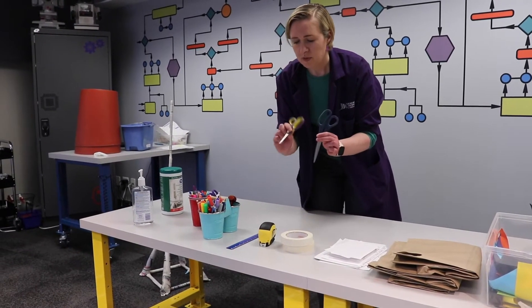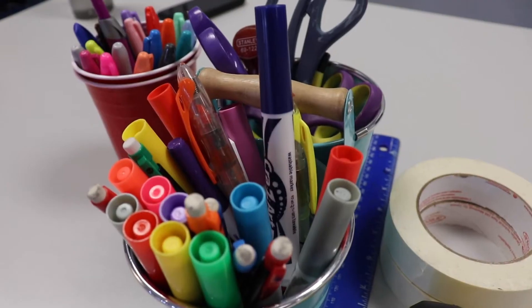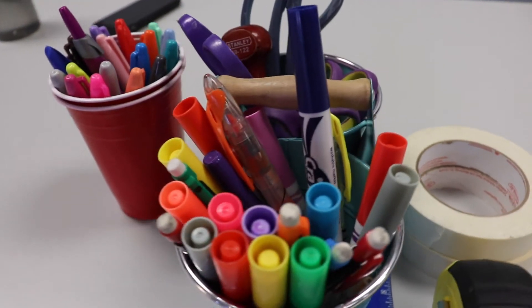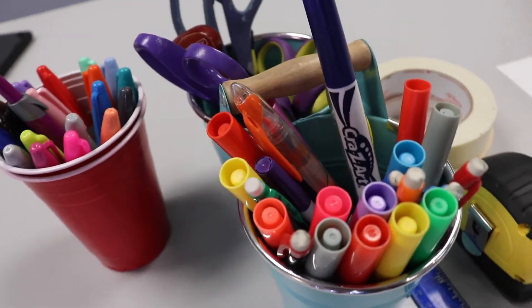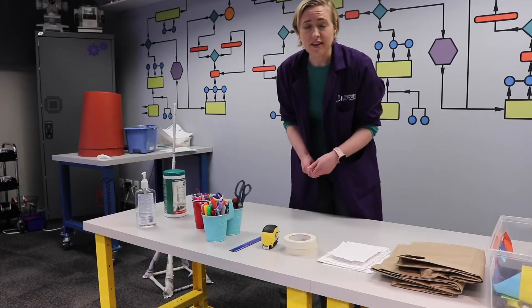If you have little hands, you might want to use little scissors, bigger hands, you can use adult scissors. And then if you want, you can also use markers or anything to decorate your tower at the very end as well.